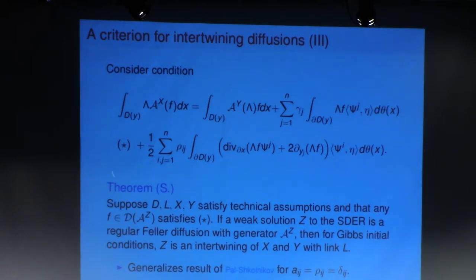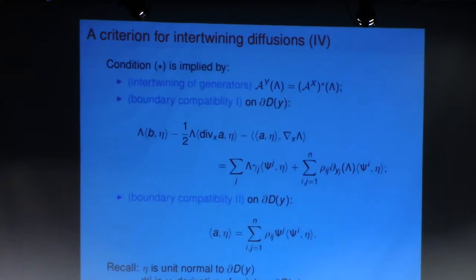And so I want to unpack this condition a little bit more. So for now, just imagine it's some big inequality between integrals. So it's actually implied by three conditions which I think are a bit more interpretable. The first is that the generators should be intertwined by this Gibbs restriction lambda. So you should think of this first condition as some sort of differential version of this Pitman intertwining.